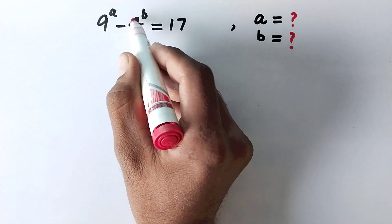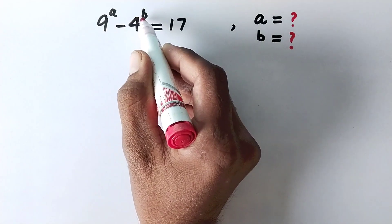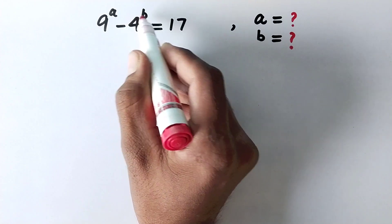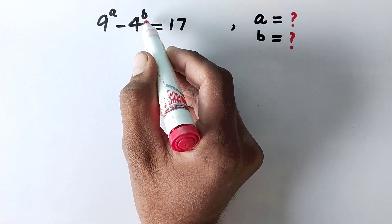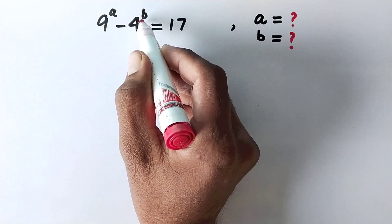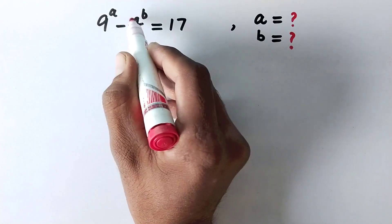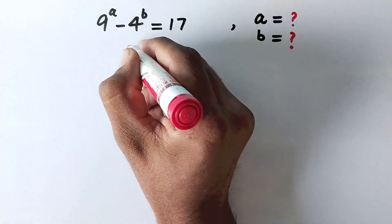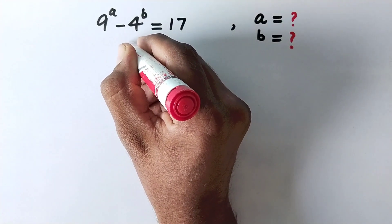If a and b are other than integers, there will be an infinite number of solutions. So to find the value of a and b, let us see the solution.